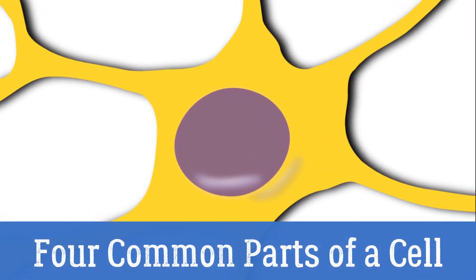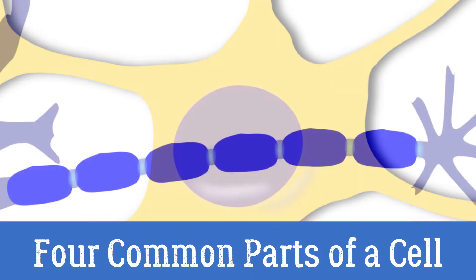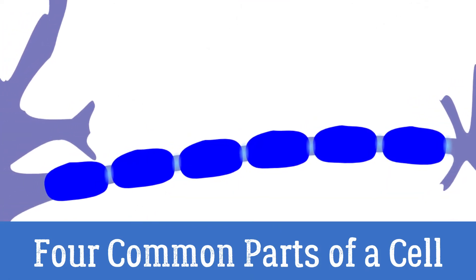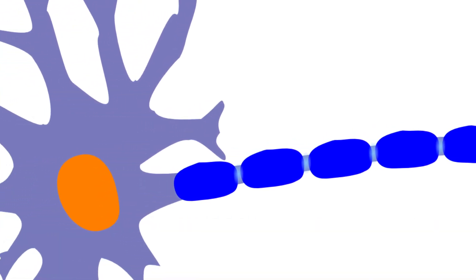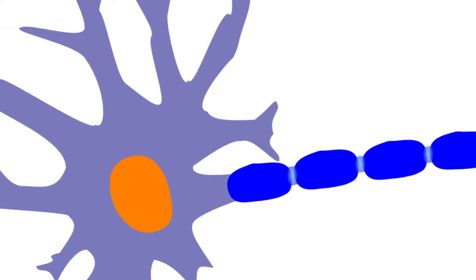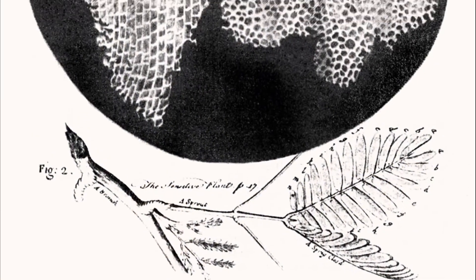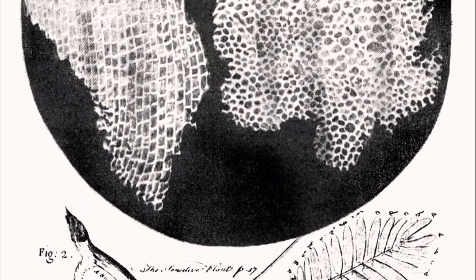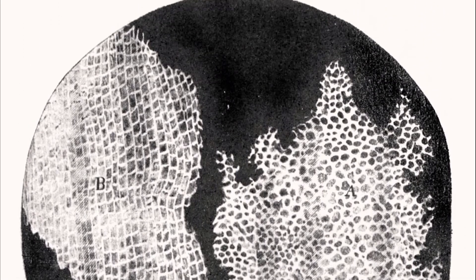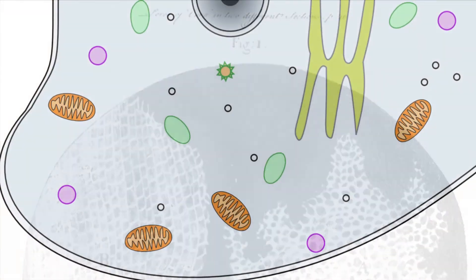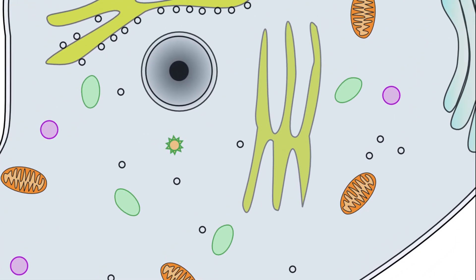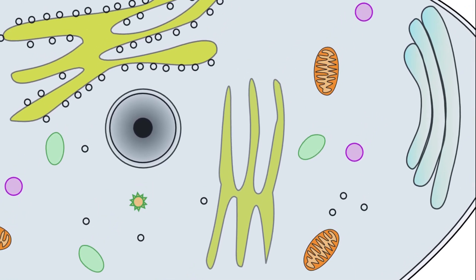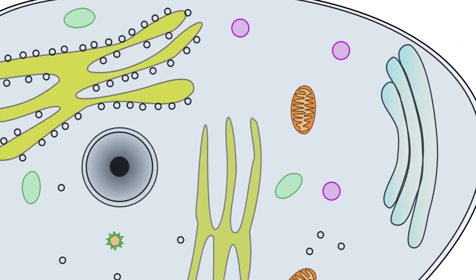Although cells are diverse, all cells have certain parts in common. The parts include a plasma membrane, cytoplasm, ribosomes, and DNA. The plasma membrane, also called the cell membrane, is a thin coat of lipids that surrounds the cell. It forms the physical boundary between the cell and its environment, so you can think of it as the skin of the cell.